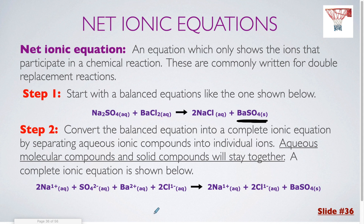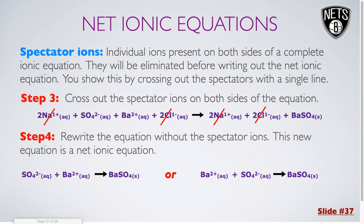What we've just written here is called the complete ionic equation, and we need to use this in order to eventually get to the net ionic equation. In step three, we're going to take that complete ionic equation and cross out something called spectator ions. These are individual ions that are present on both sides of the complete ionic equation — they're essentially the ions that are just floating around inside the water the entire time and not actually doing anything. In this example, I can see that there were two Na⁺ on the left and two Na⁺ on the right, so I cross those out. Two Cl⁻ on the left and two Cl⁻ on the right — I cross those out as well. I can't cross out the barium and sulfate because they were aqueous on the left but solid on the right, so they're different — they actually did something.